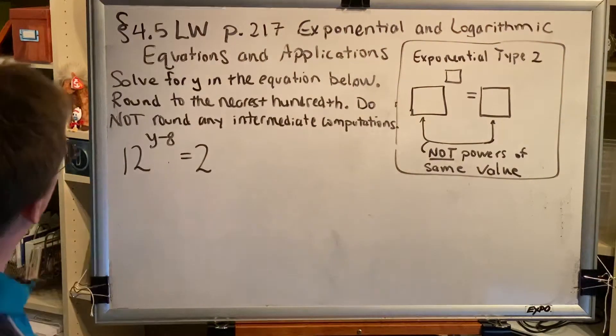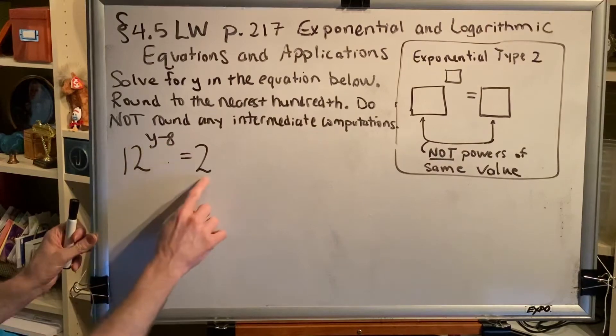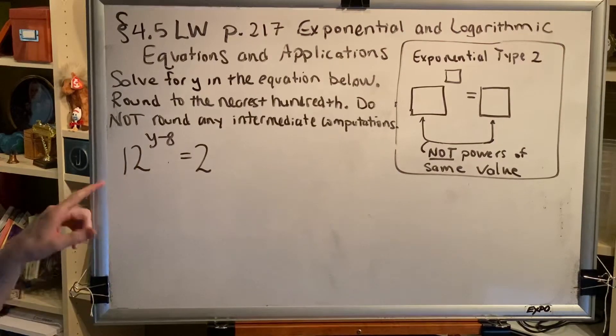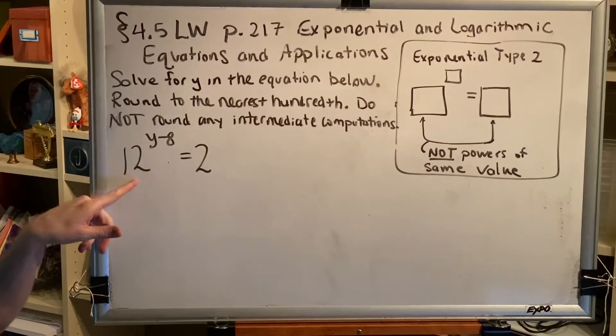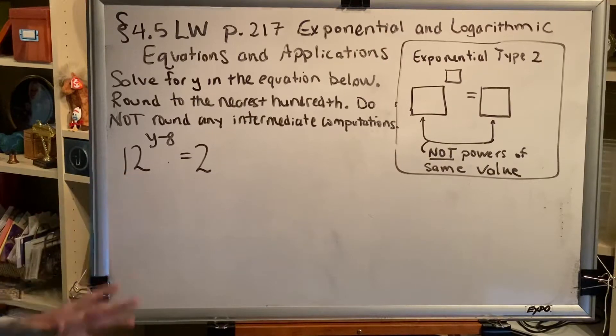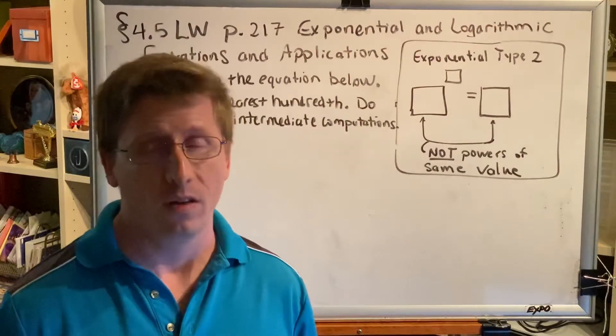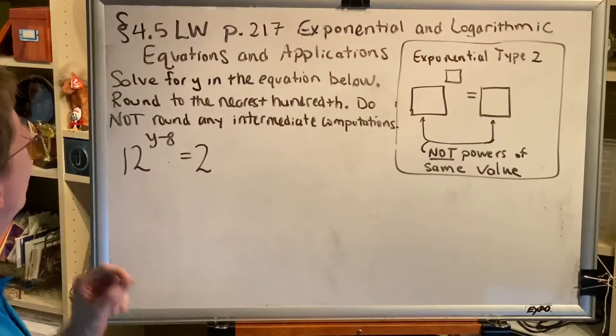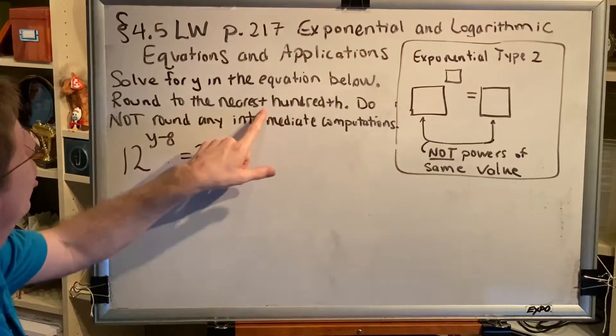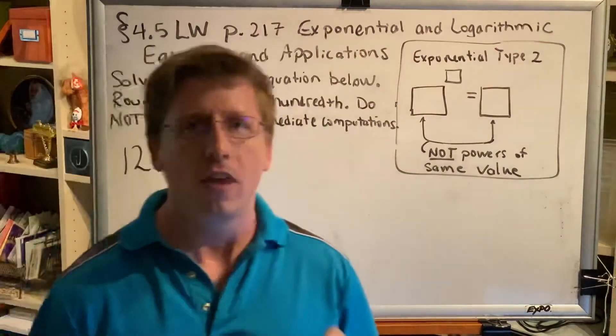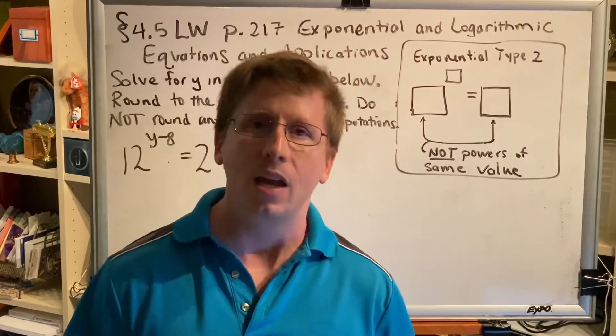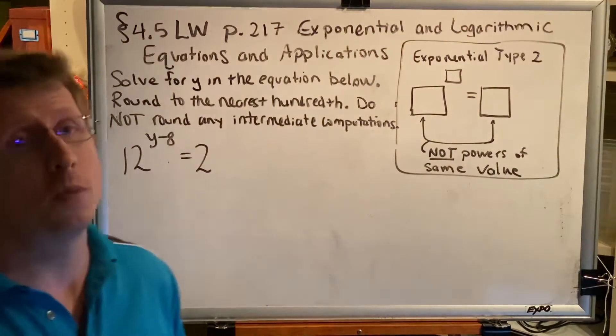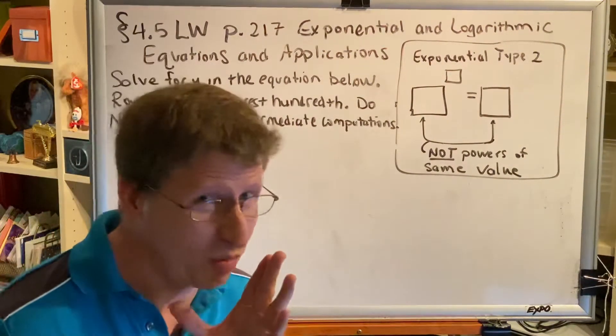We're going to solve this. This is already in the correct form: base raised to exponent equals value. So we have an important decision to make: are we going to take the logarithm base 12 of both sides, or are we going to use another log base like 10 or e? To make that decision, you have to look in the instructions. If the instructions say that you're looking for a decimal approximation, then you must choose base 10 or base e because you're going to need your calculator. Let's choose base 10.